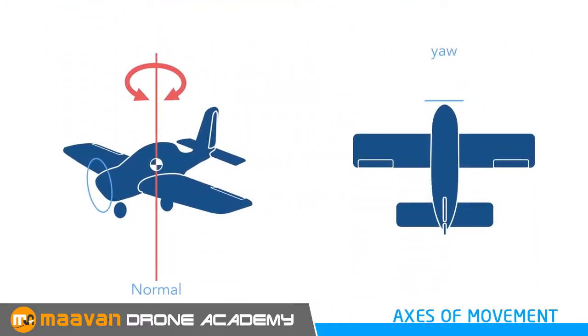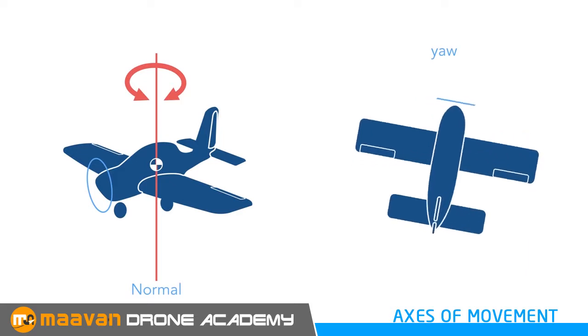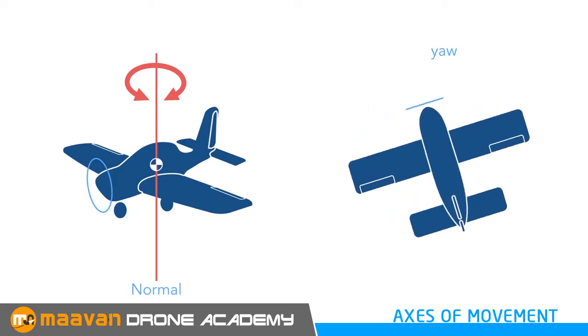The rotation about normal axis is called yaw. This is the movement of the nose of the aircraft from side to side.